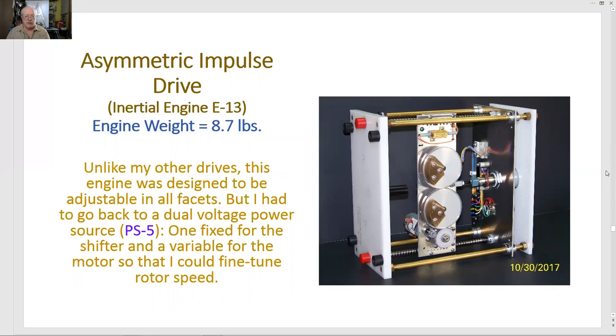Asymmetric impulse drive. Engine weight 8.7 pounds. It actually would have been 7.7 pounds if I could have gotten some threaded aluminum rods. Here I used brass support rods, which increased the weight of the engine by an extra pound. Unlike my other drives, this engine was designed to be adjustable in all facets. But I had to go back to a dual voltage power source, PS5, one fixed for the shifter, and a variable for the motor so I could fine tune rotor speed.